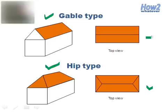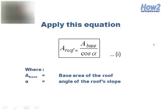You also need to have the blueprints of the building for easier calculations. Here is how we measure the surface area of the roof. Simply apply equation 1: base area divided by sin alpha, where A_base is the base area of the roof and alpha is the angle of the roof slope. This equation is applicable for both the gable type and hip type of roof.